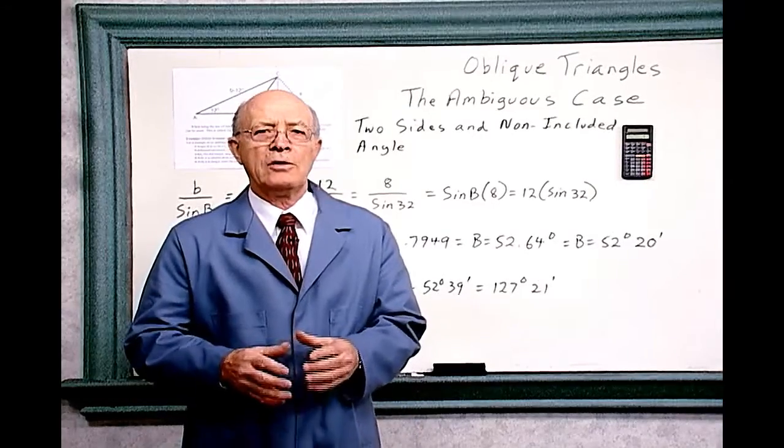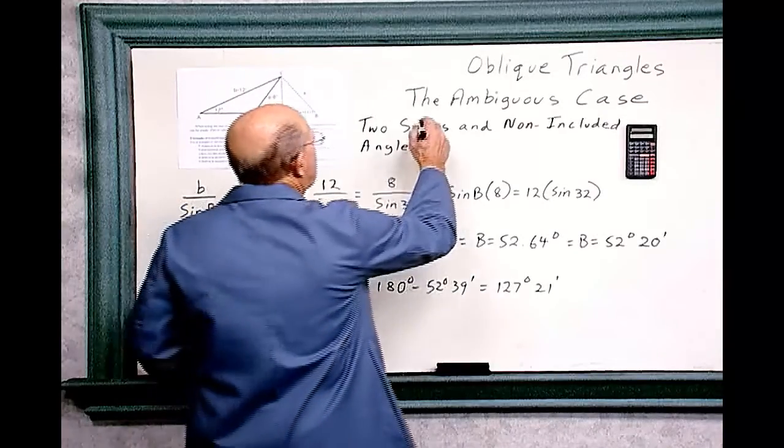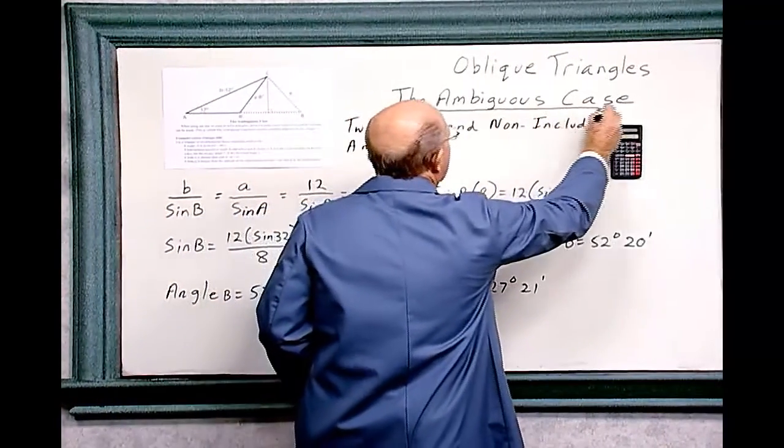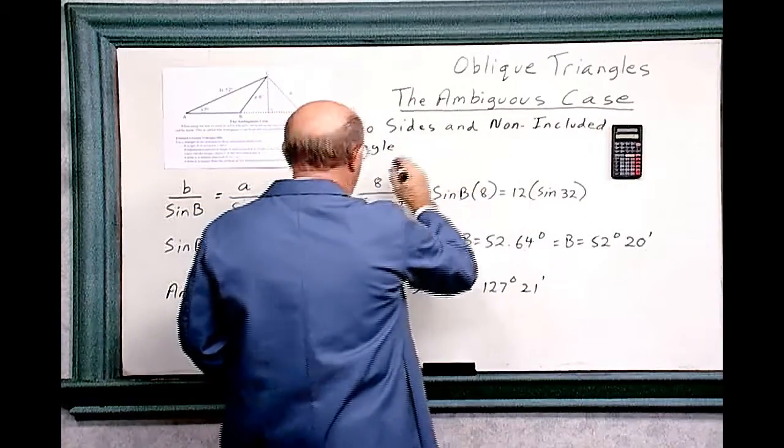Oblique triangles: the ambiguous case. That's this over here, two sides and a non-included angle.